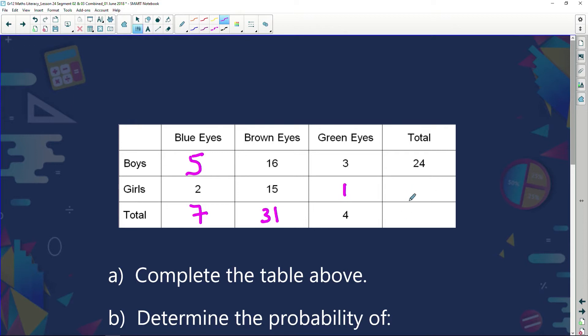Now we can't work out these totals looking at our horizontal columns. Why? Because we've got two missing values, but we can fill in these values when we look across horizontally. Girls: 2 plus 15 gives me 17, plus 1 gives me 18. Total: 7 plus 31 is 38, plus 4 is going to give me 42.